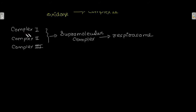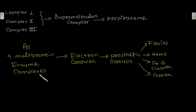Complex I, II, and III appear to be associated in a supramolecular complex termed the respirosome. All four multi-protein enzyme complexes acting as electron carriers comprise prosthetic groups such as flavin, heme, iron-sulfur (FES) clusters, and copper.